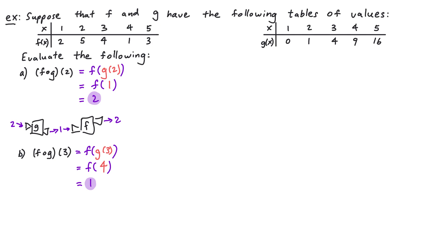If we think about this in terms of our diagram, we're plugging 3 into the g function first. When we plug 3 into g, 4 comes out. Plugging 4 into f, we see that 1 comes out at the end. That's why 1 is the output of the composition when we plug in 3.